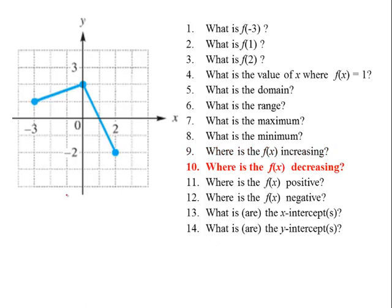Where is f of x decreasing? It was increasing up to this point, but then from that point all the way down to this point the slope is negative — this is decreasing. So we say from 0 to 2. In set notation this would be parentheses 0 comma 2 parentheses, because these are not equal to.